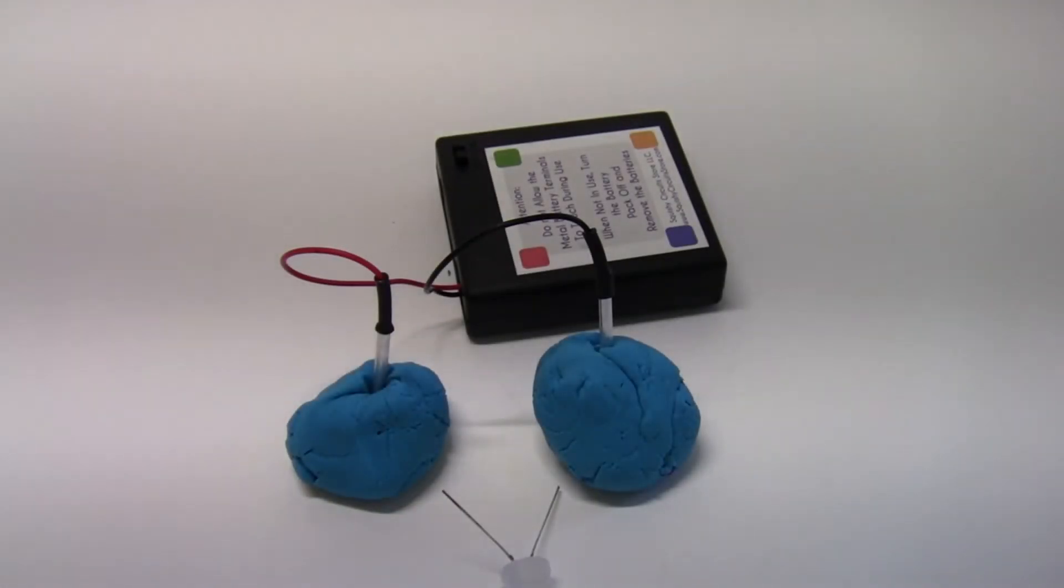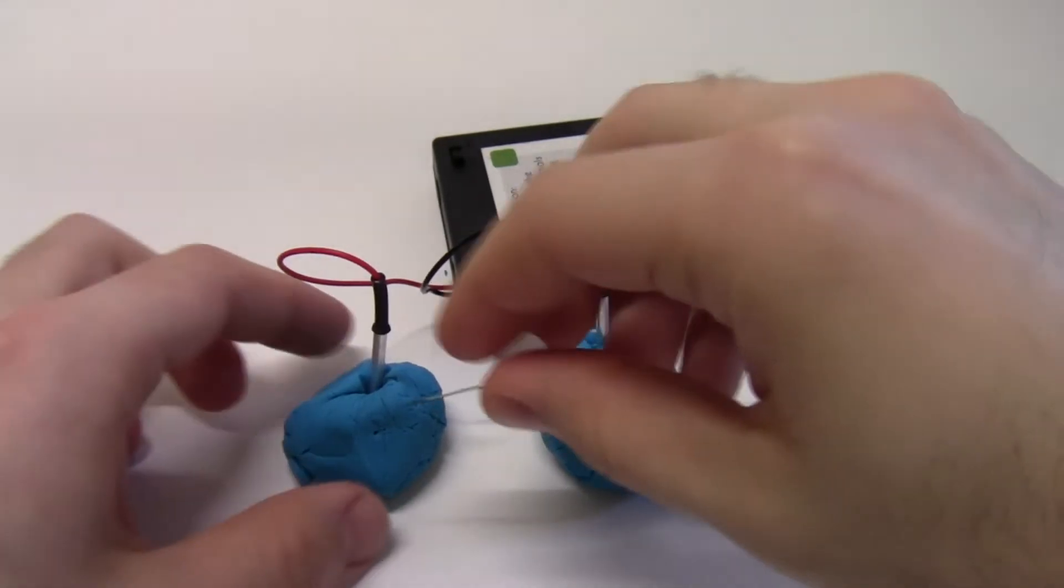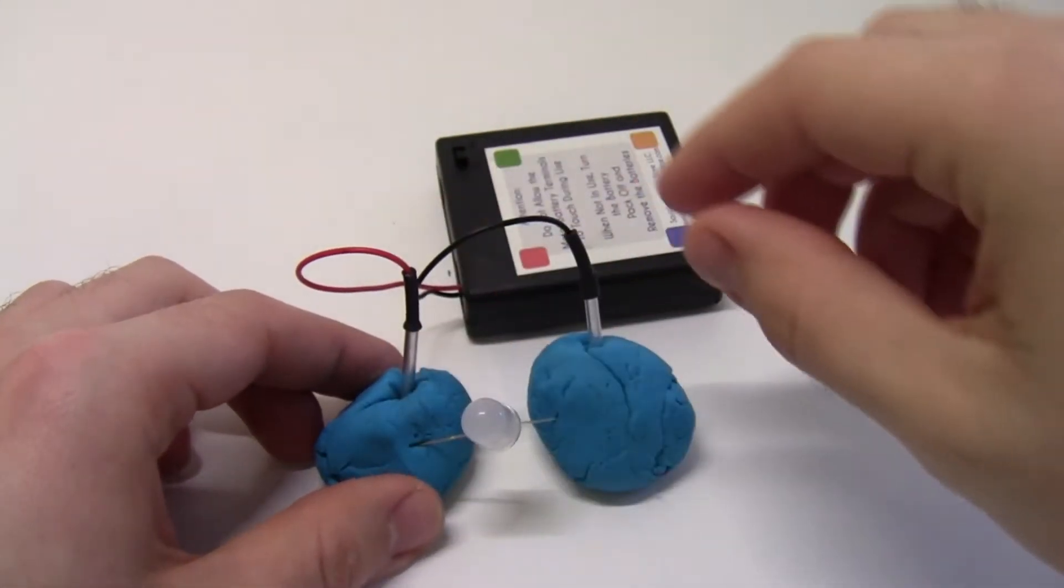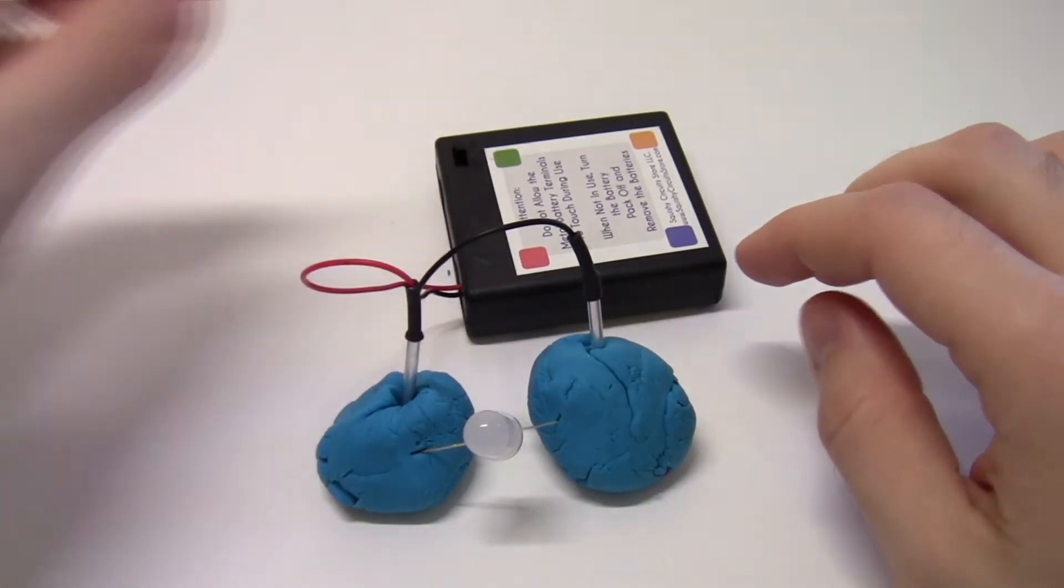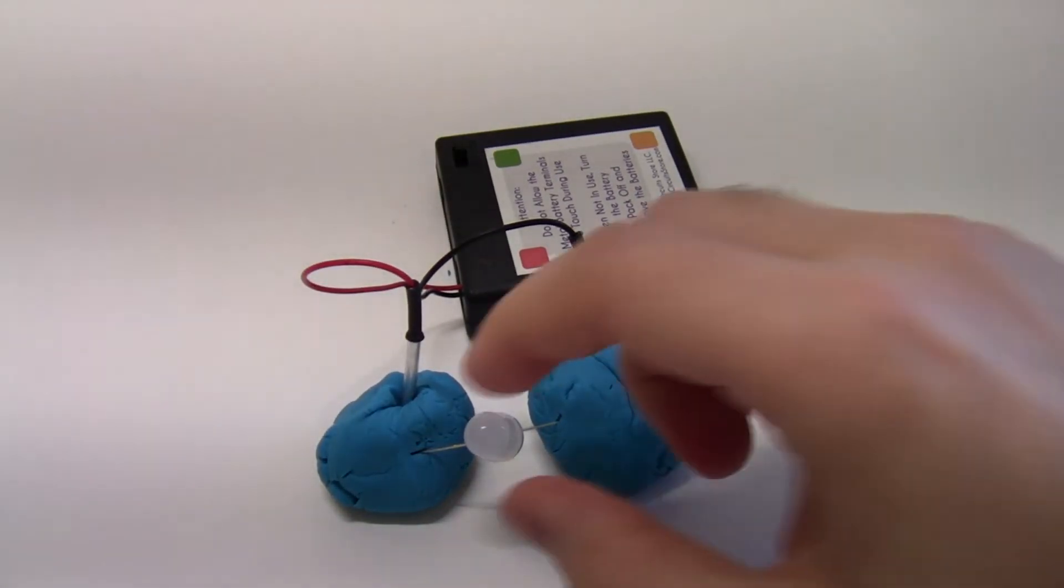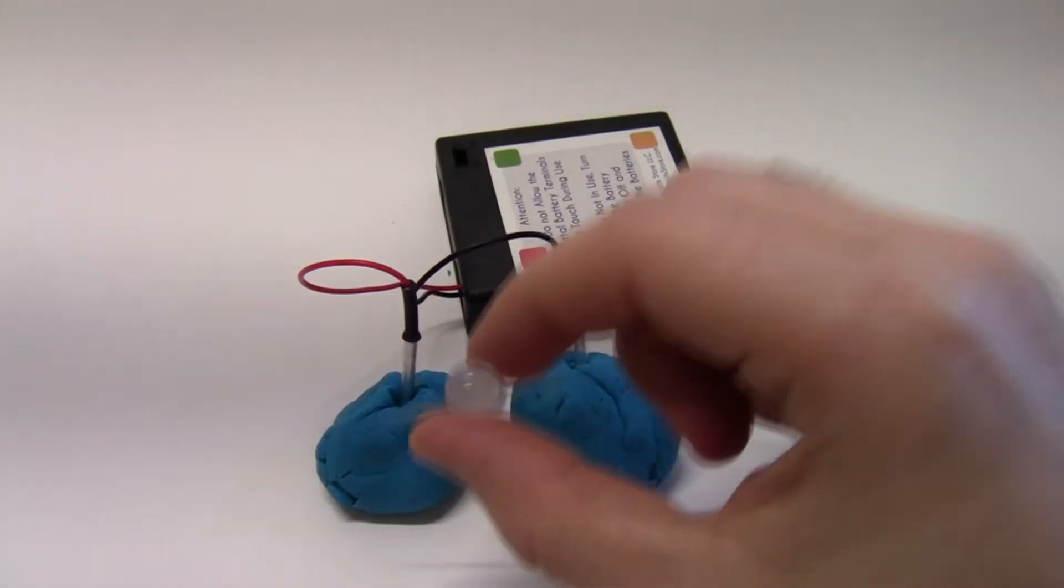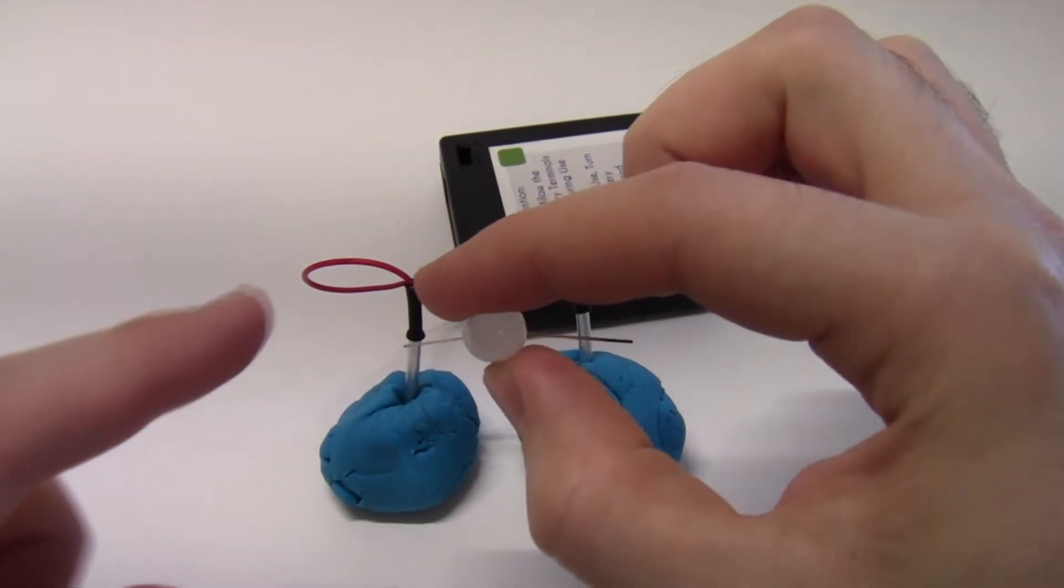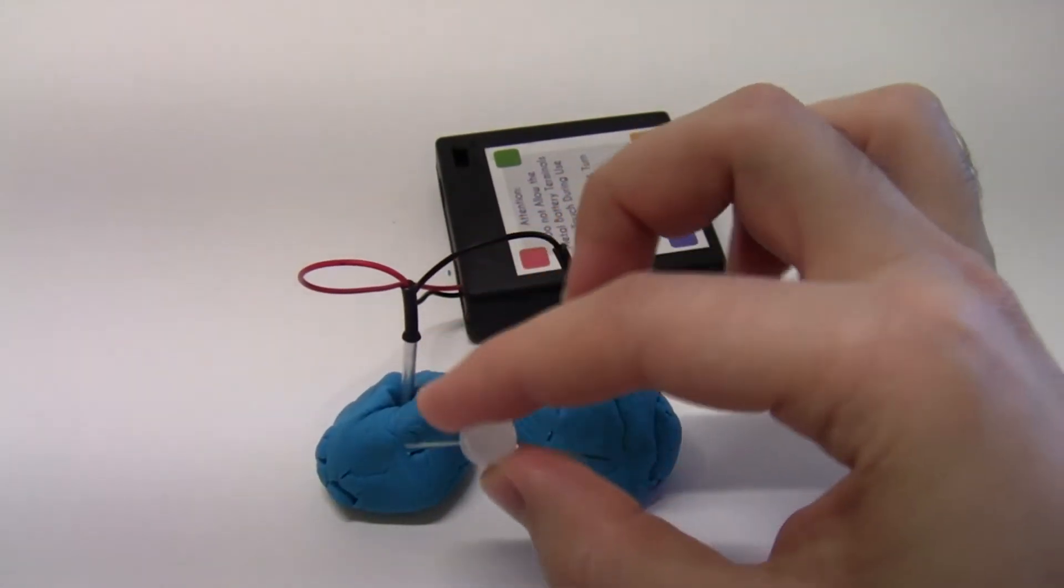Now if your LED did not light up on the first try, don't panic. You can see here I have the LED plugged in and I turn the battery switch on and the LED doesn't light up. All you have to do if that occurs is take the LED out, flip it around so the little metal legs are facing opposite directions, plug it back into the Play-Doh, and it should light up.